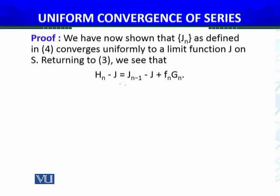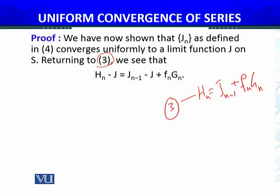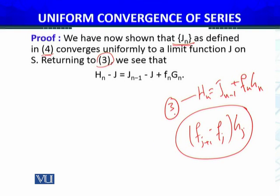Now, what we have done is: our Hn, from equation 3, equals Jn-1 plus fn·capital Gn. We have shown that Jn — which is the sequence of partial sums of the series (f(j+1) - f(j))·Gj — converges uniformly to a limit function, let's say j, on the set S.